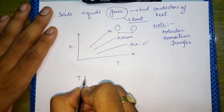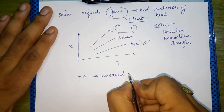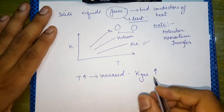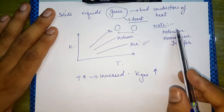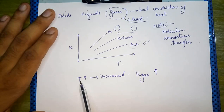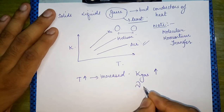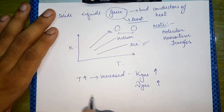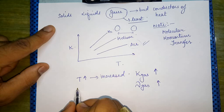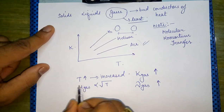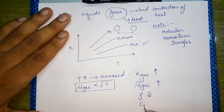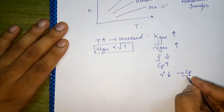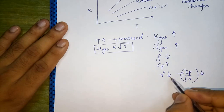As temperature is increased, the thermal conductivity of gases also increases, because molecules get more energized and heat transfer by molecular momentum transfer increases. The kinematic viscosity of the gas also increases with temperature. From fluid mechanics, the dynamic viscosity (μ) of gases is directly proportional to the square root of temperature. Density decreases with temperature, specific heat increases, and gamma (cp/cv ratio) decreases.